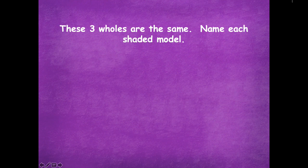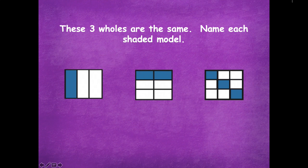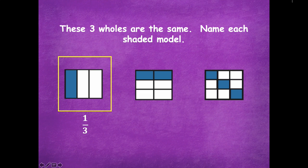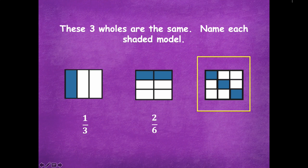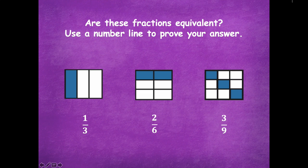Now we're going to switch gears and look at fractions in a different way. These three wholes are the same — name each shaded model. This first one: what fraction names this model? Yeah, one-third — it's three equal parts and one is shaded. How about this one? Two-sixths. And this one? Three-ninths. Now we're going to figure out if these are equivalent, but we're going to use our number line to prove it, because maybe you're not sure. Let's jump to our number line to model these three fractions.